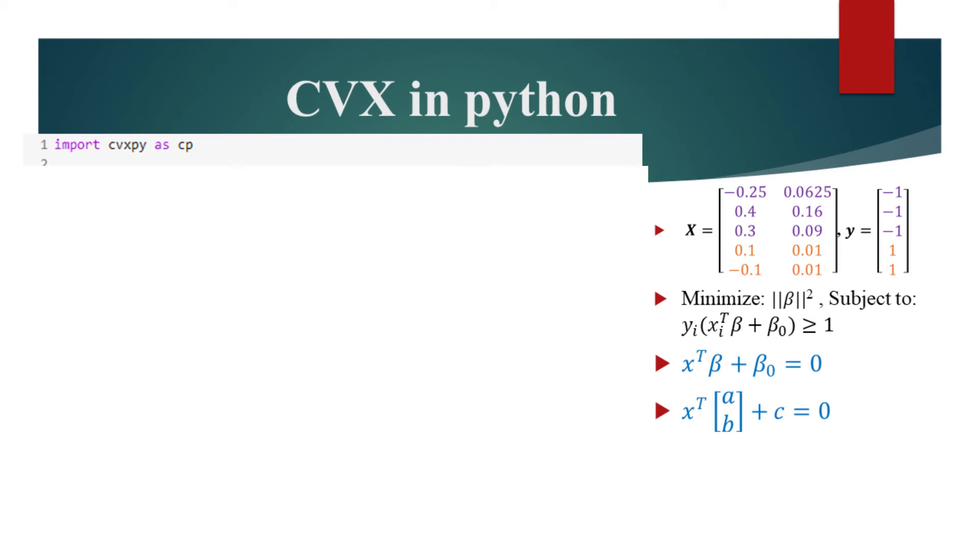First, we import the library. In this case, that would be CVXPy. Then, we will need the data to work with. Once we have the data, we have to define the variables to optimize. Here, the variable A will correspond to the first element of beta, B will correspond to the second element of beta, and C will correspond to beta_0 as shown on the right in blue.